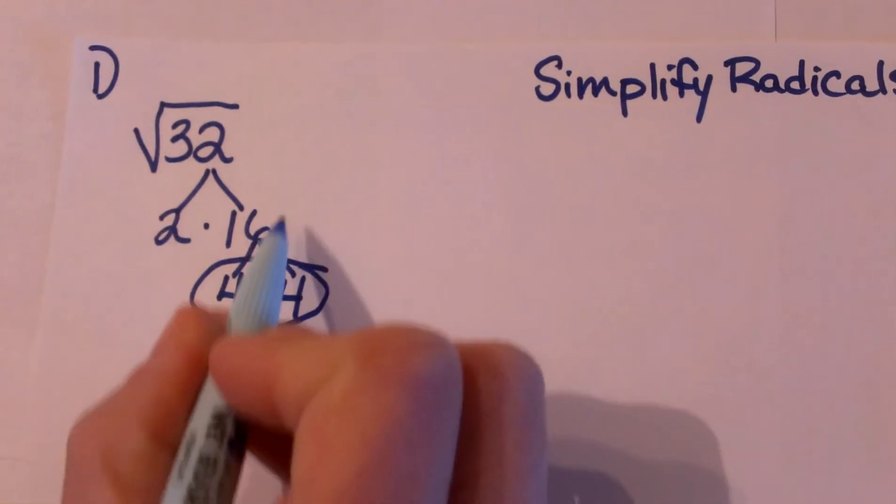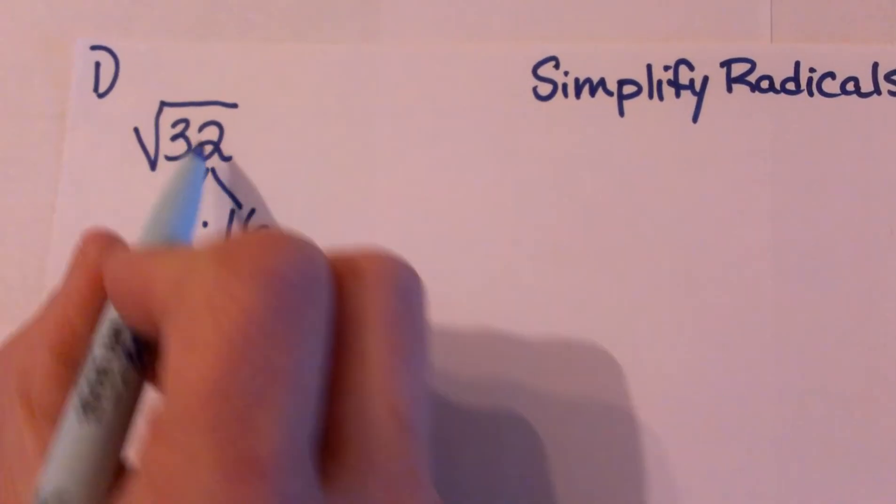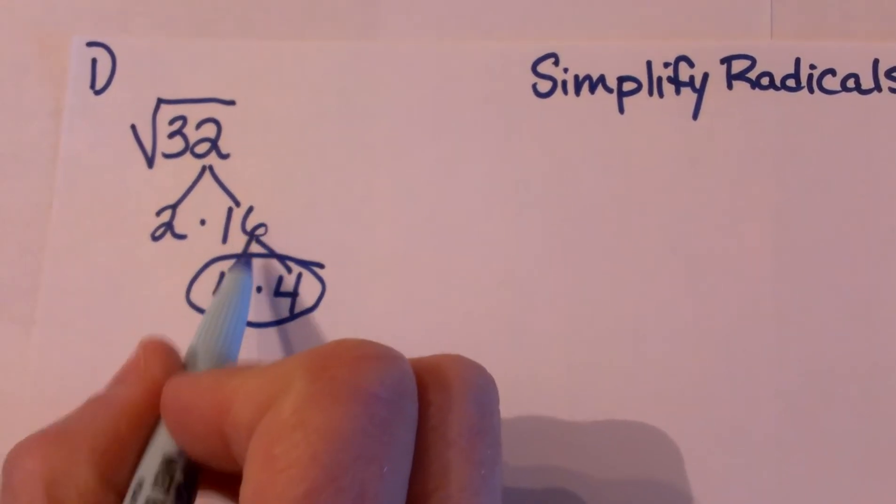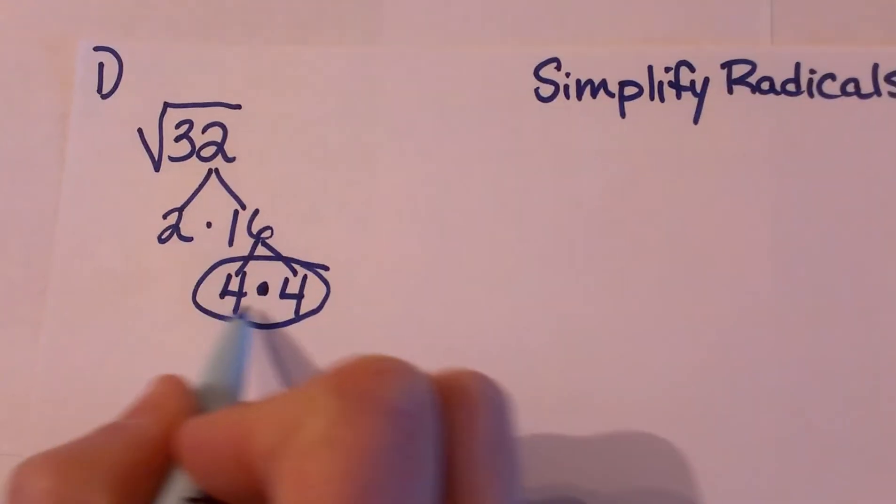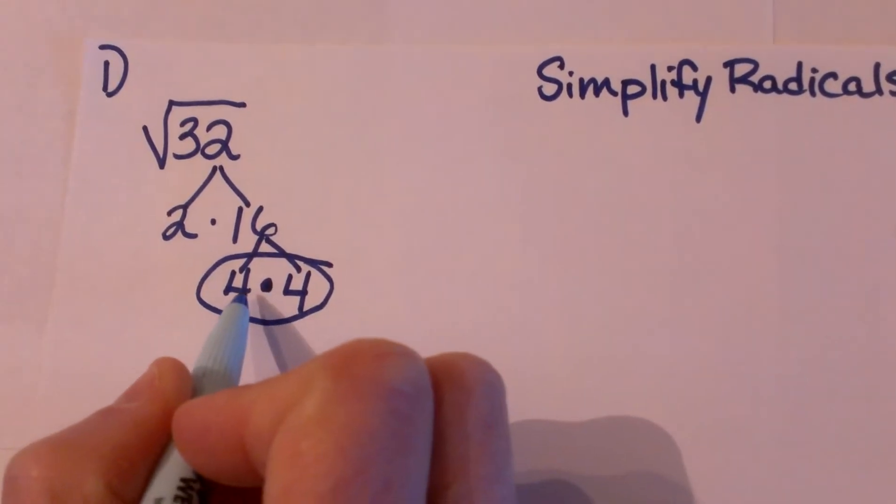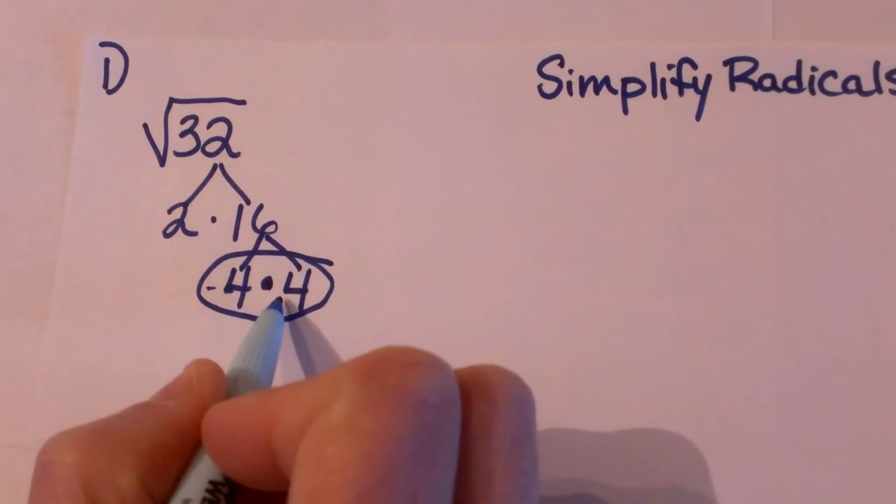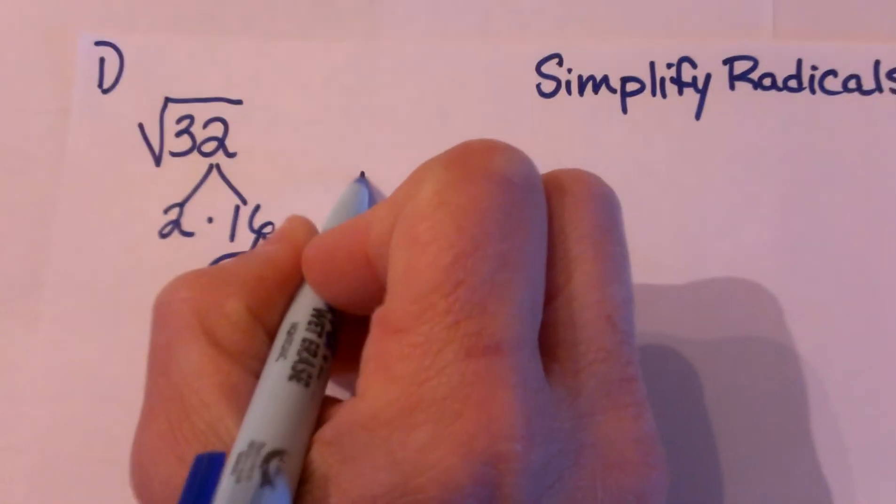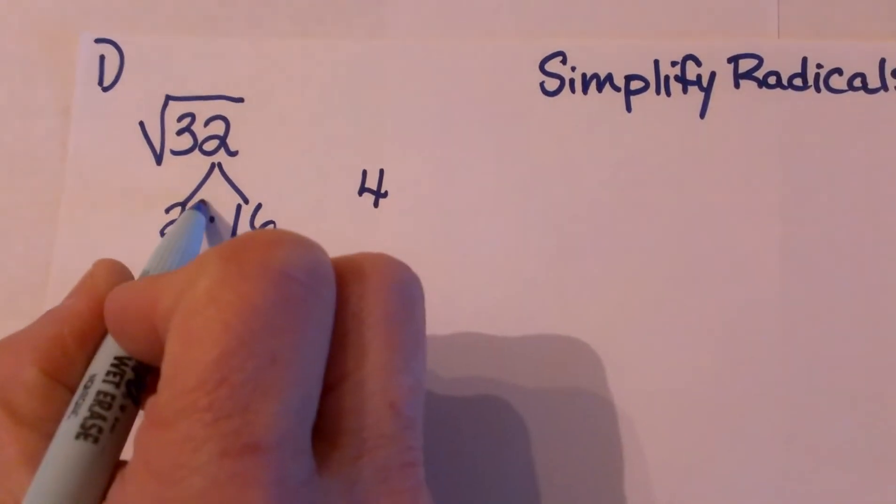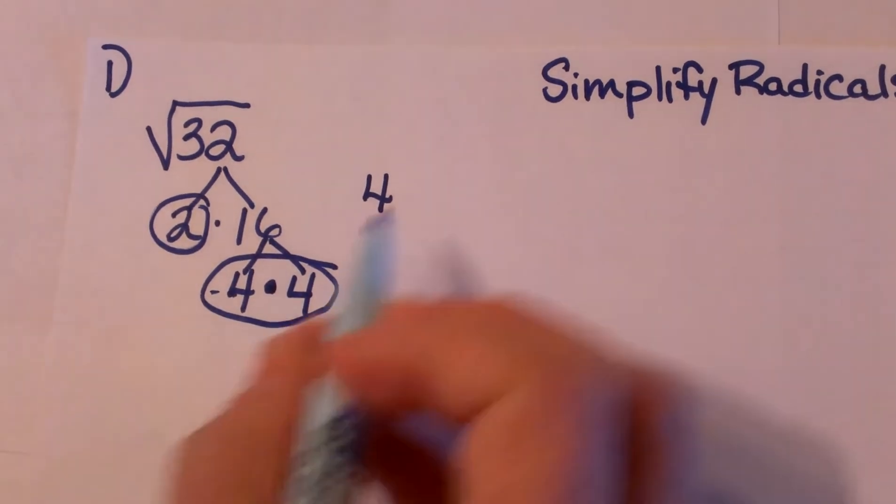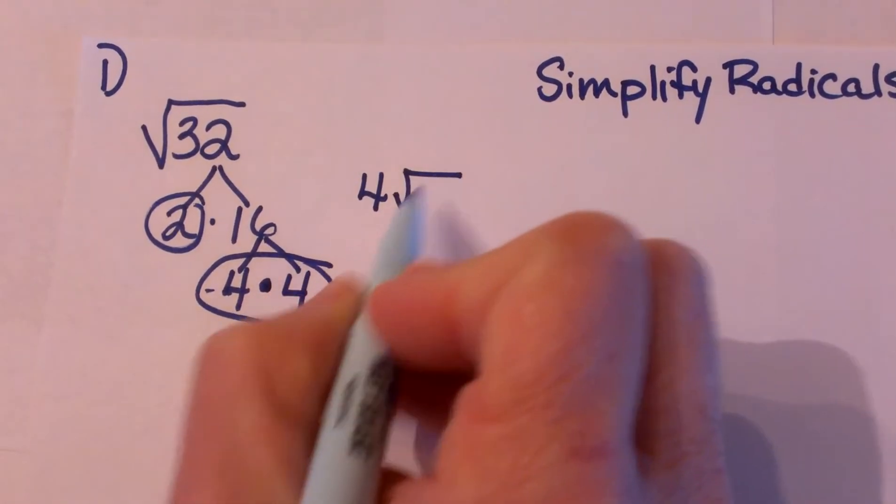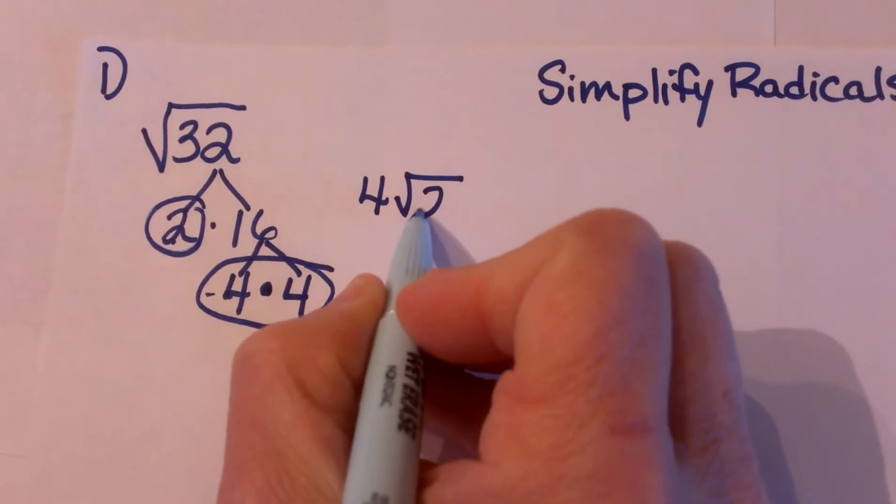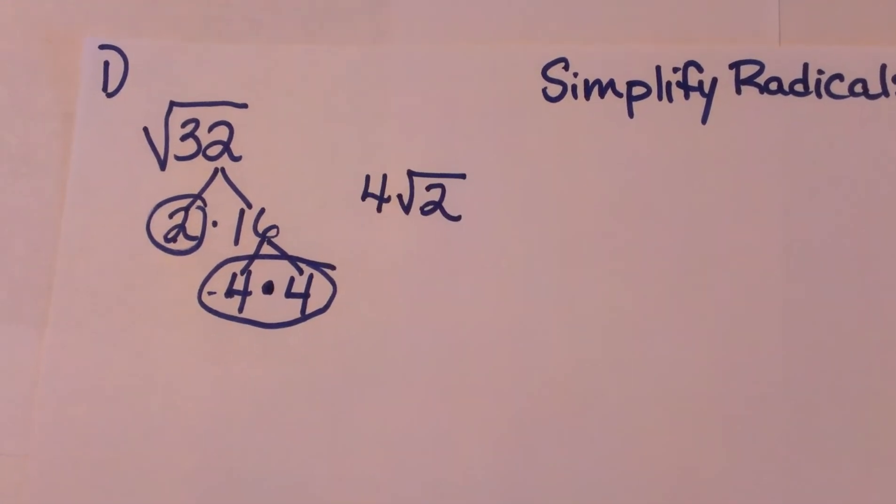So because 16 is a factor of 32 and it is a perfect square I can take the square root of 16 out which is 4. So once you have a pair you take it out of the radical. So this one simplifies to 4 and then 2 doesn't have a partner, it doesn't have a perfect square with it. So it is going to have to stay in the radical so the answer is 4 square root of 2.